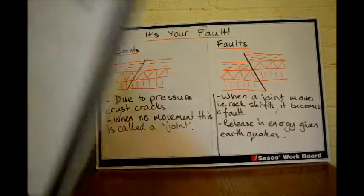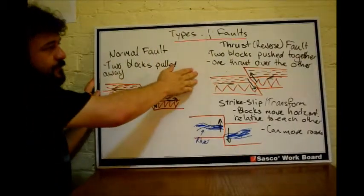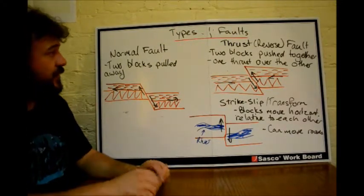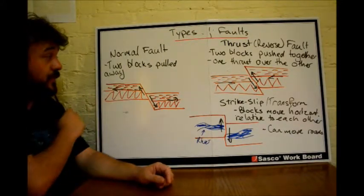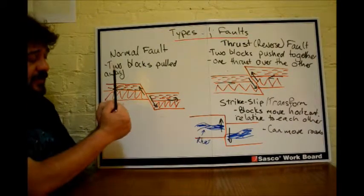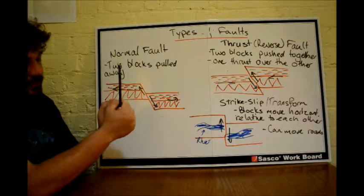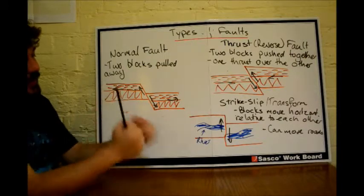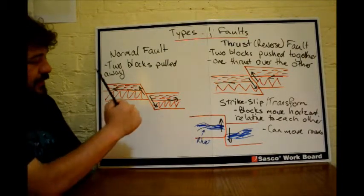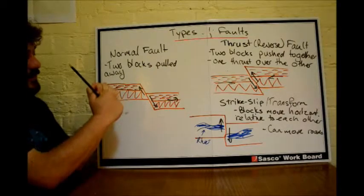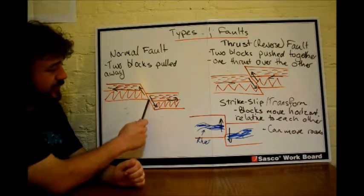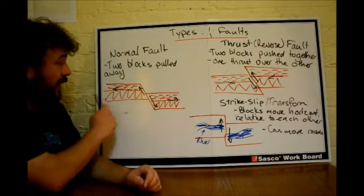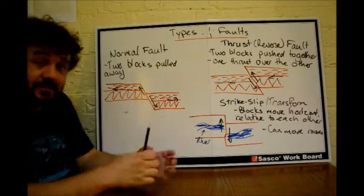So here we have the types of faults. First, we have the normal fault. Basically, you have two blocks which are next to each other, so one block, but the pressure is on, so you've got the joint in the middle, and they pull away from each other. Now, the joint won't be like that. If the joint is flat, you get this sort of one here, maybe, but if the joint is not going to go straight down, so as they pull away, they slip, and one either moves up and the other moves down relative to each other. So as they move away, they slide down that joint.